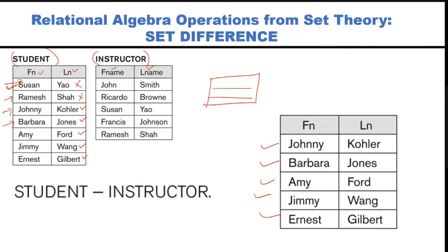An important point: the attribute names in the final resultant table come from the first relation. Here the first relation is 'student', so the result has 'fn' and 'ln'. This is a very important point for exams — in objective type questions they may try to confuse you with attribute names, but always take attribute names from the first relation.